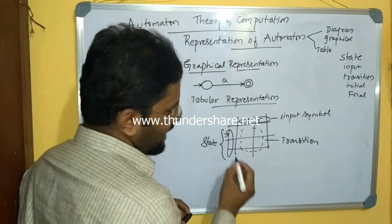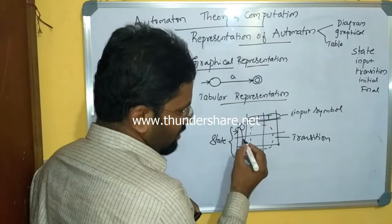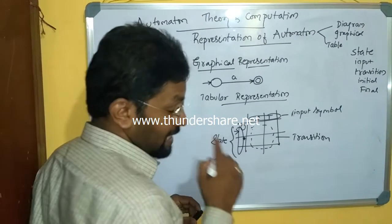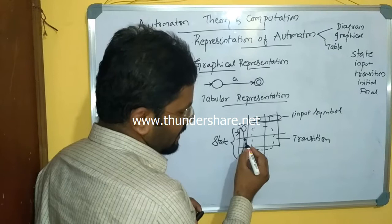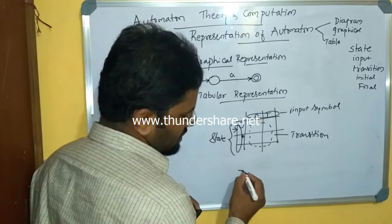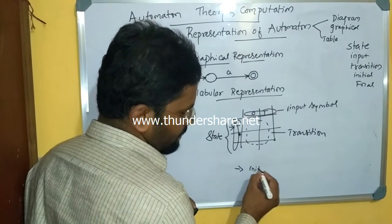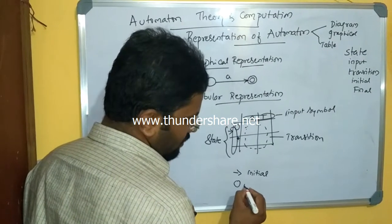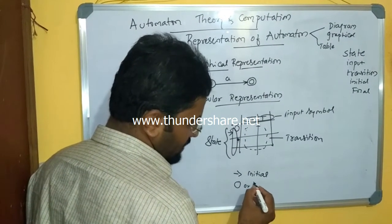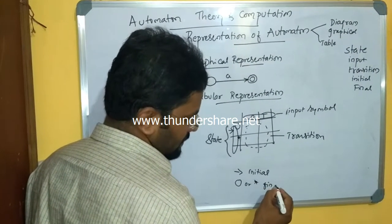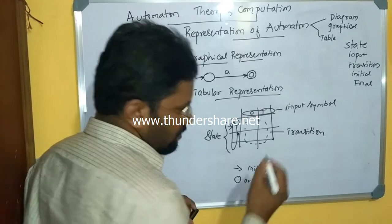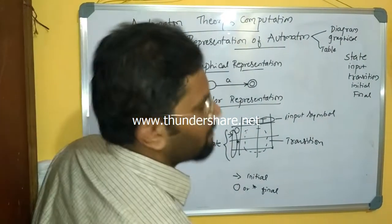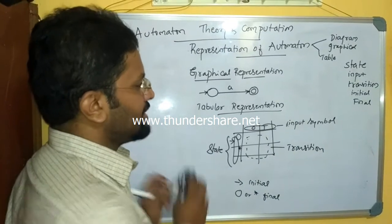Either encircling a state or putting a star mark as a superscript indicates the final state. Just an arrow mark indicates the initial state, while encircling or a superscript star indicates the final state. These are the two ways of representing an automata.